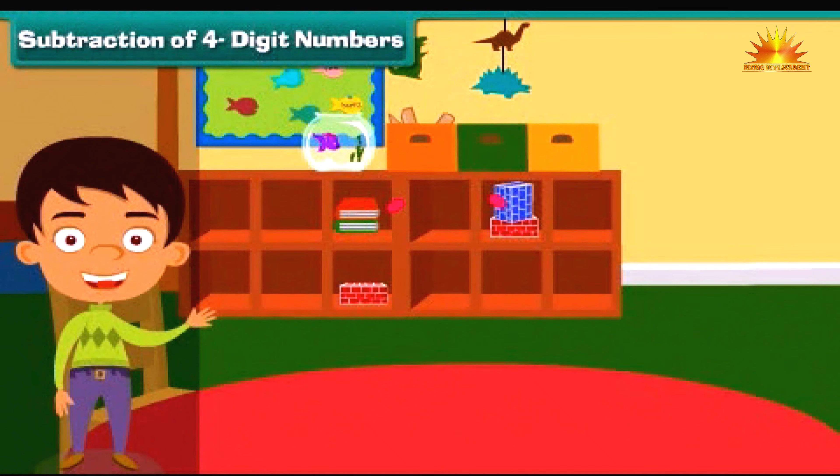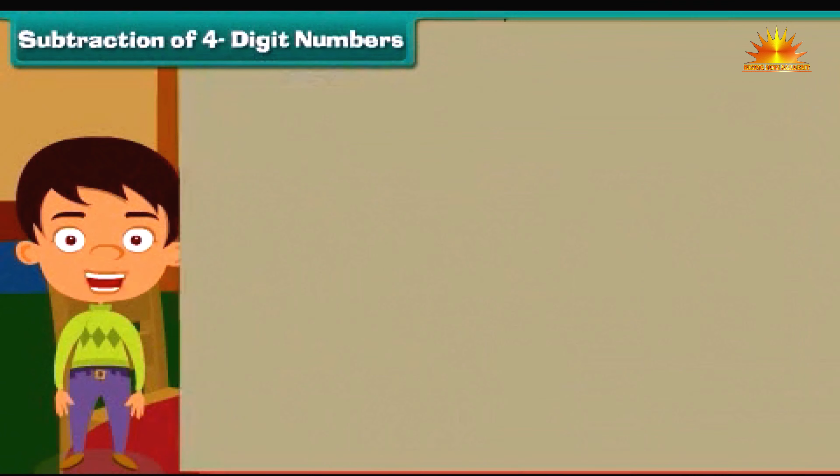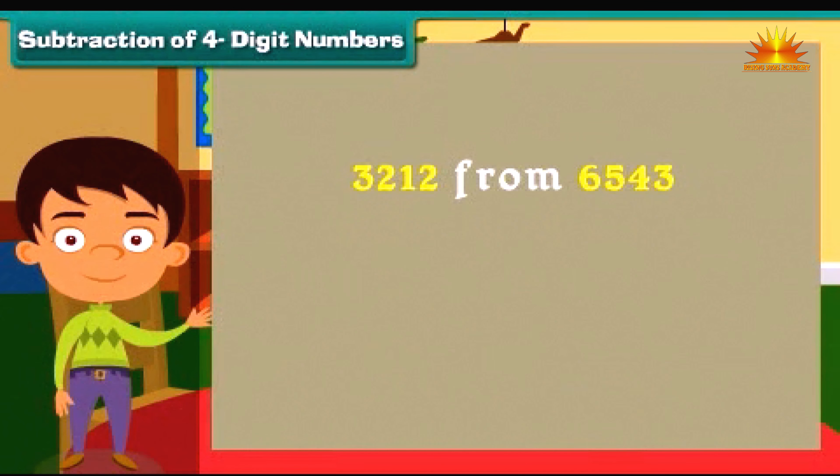Subtraction of four-digit numbers. Friends, Ben has now moved to solve subtraction. Let us subtract 3212 from 6543. Write the numbers in the respective columns.